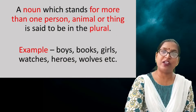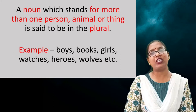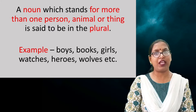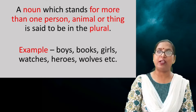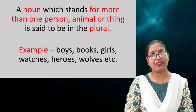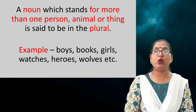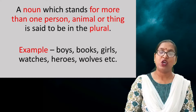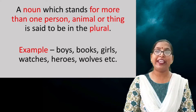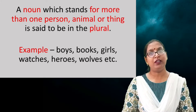Now let us see what is a plural noun. A noun which stands for more than one person, animal or thing is said to be in plural number. For example: boys, books, girls, watches, heroes, wolves. In all these examples we can see that these words refer to more than one person, animal or thing.